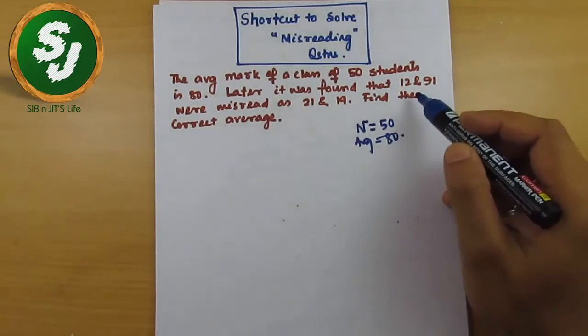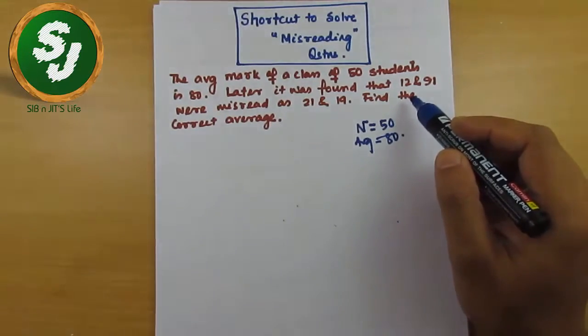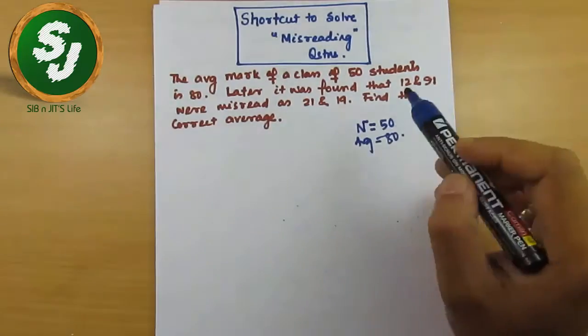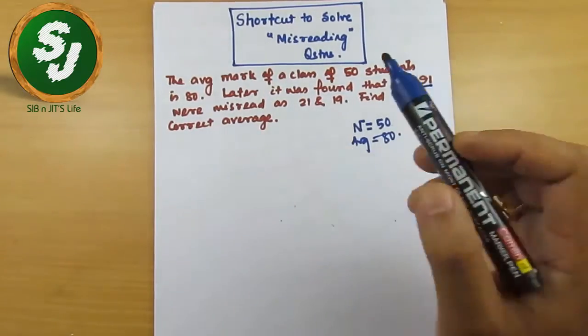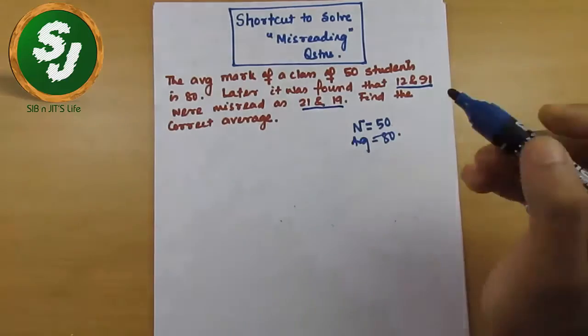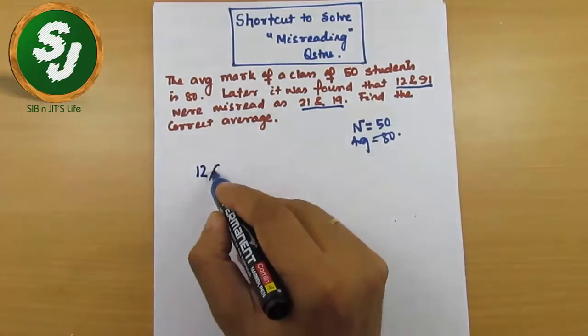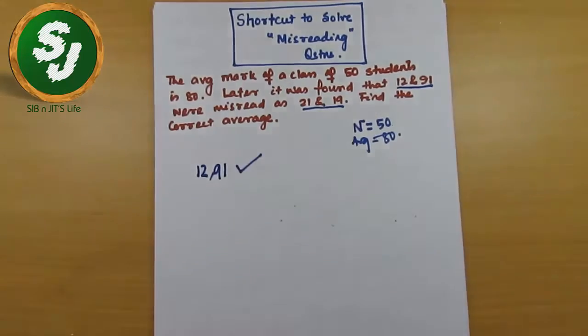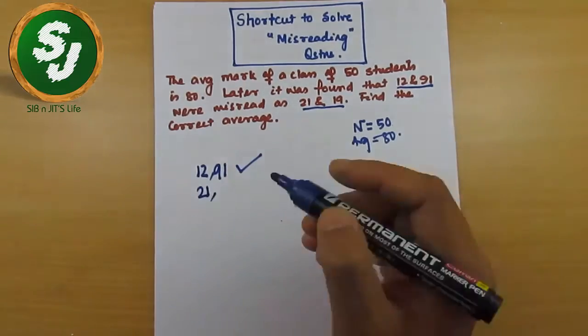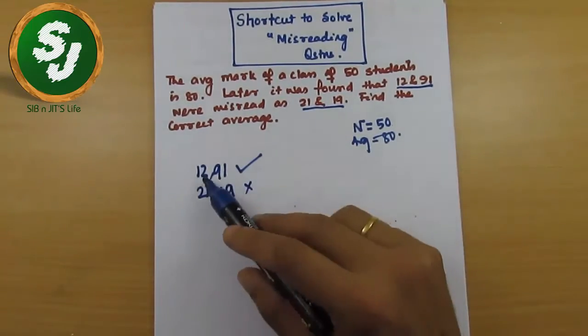It was found that in the next sentence there would be misreading information, which are the numbers which are wrong and which are right. Later it was found that 12 and 91 were misread as 21 and 19. In this statement, it is obvious that 12 and 91 were correct marks, and these correct marks were misread as 21 and 19, so these were wrong marks.